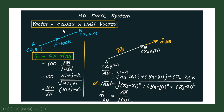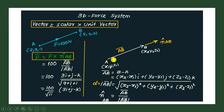A vector is nothing but a product of a scalar and a unit vector. To understand this vector, consider two points A and B in space — not passing through the x-axis, y-axis, or z-axis, but passing through two points A and B.